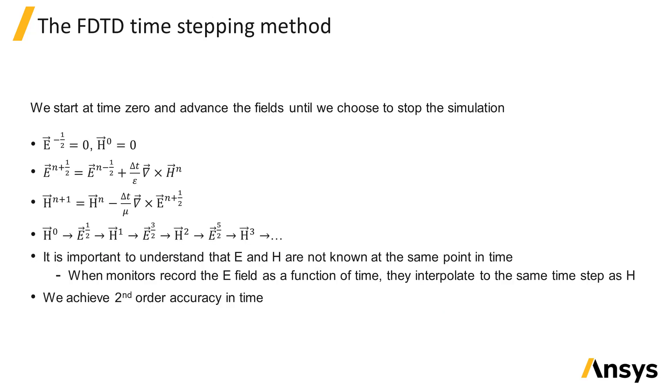At the beginning of the simulation, the E and H fields are typically zero. From here we update E at time N plus 1 half, which is a function of E at the previous time step plus a term proportional to the curl of H at time step N. Once we have the E field updated to time N plus 1 half, we can proceed to update H at time N plus 1, which is a function of H at the previous time step and the curl of E taken at time step N plus 1 half.